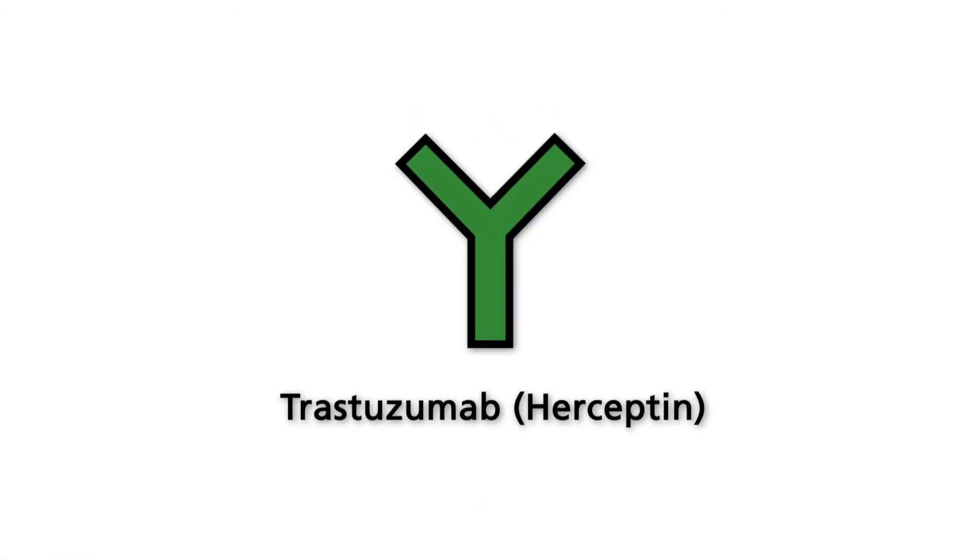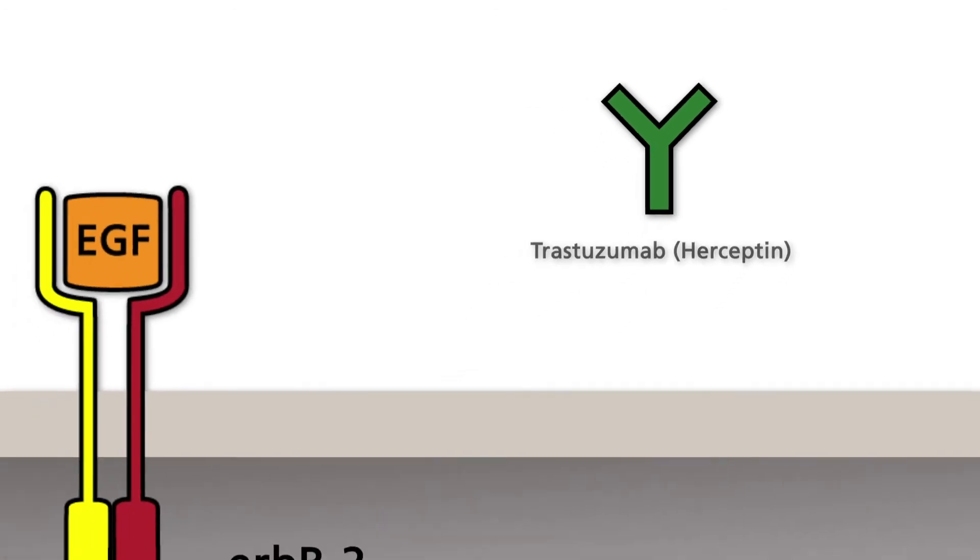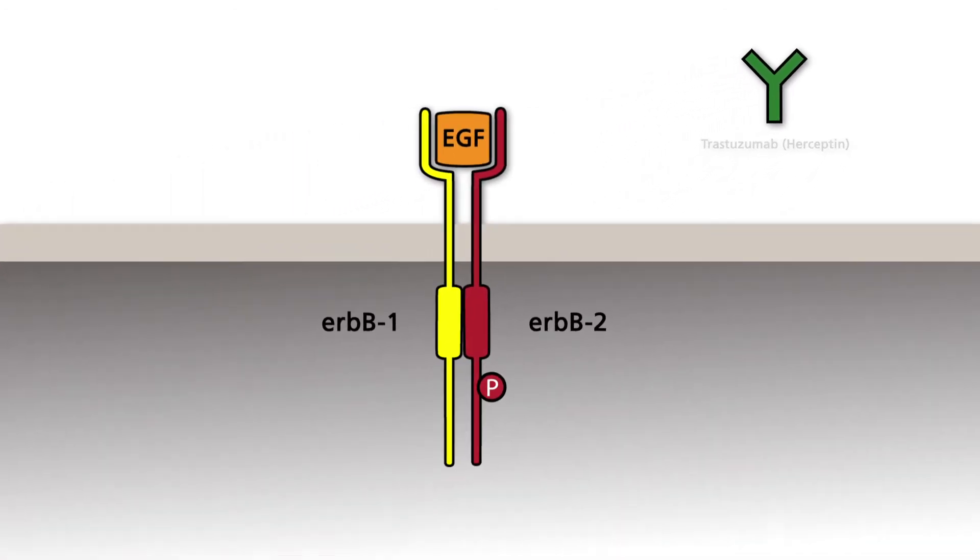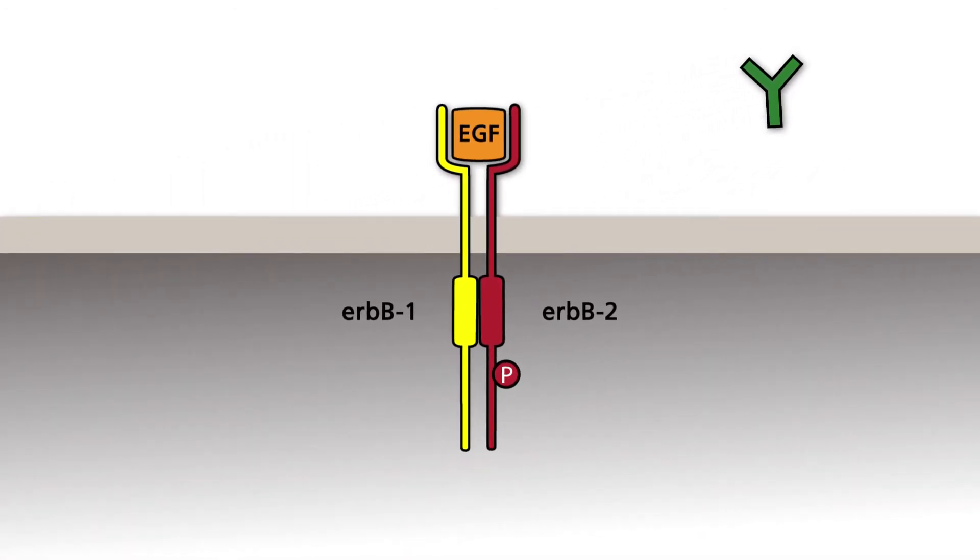Trastuzumab, registered trade name Herceptin, is the best-characterized antibody used in cancer immunotherapy. It binds to an antigenic site within the extracellular domain of the receptor ERB-B2 and inhibits the activation of the receptor, independently of ligand binding and heterodimerization.